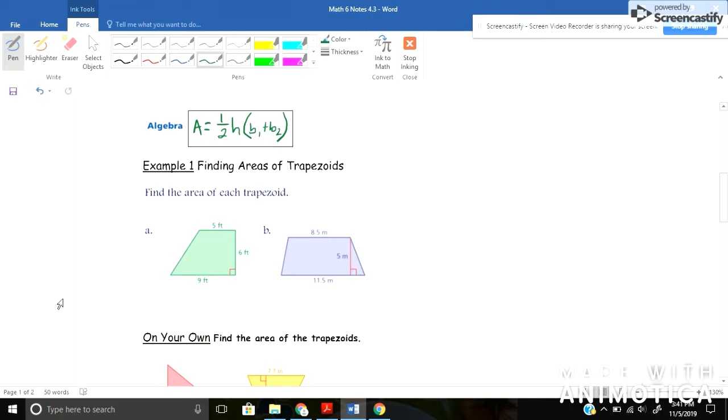So from one base to the other base whatever line makes that 90 degree angle that's the height that we need to use. Okay, example one, it says finding the areas of trapezoids, find the area of each trapezoid. Okay, again first I'll do, so for letter A, I'll write my formula: A equals one half times the height times the bases added together.